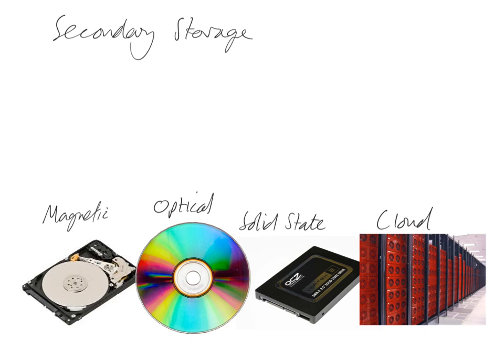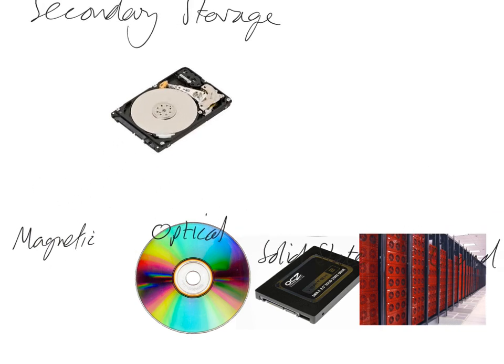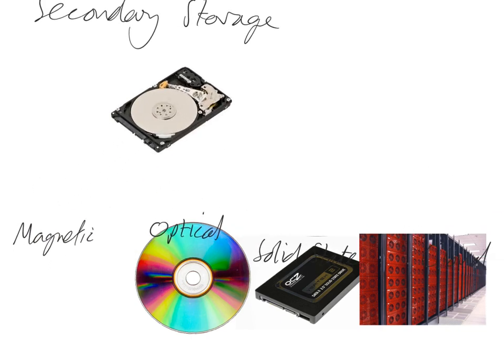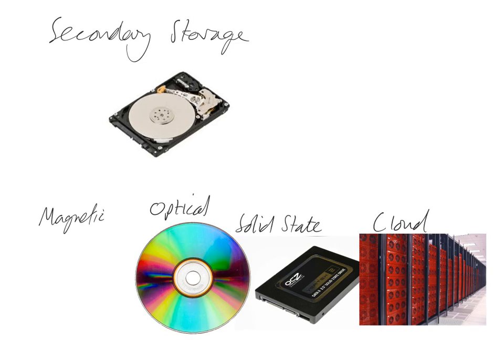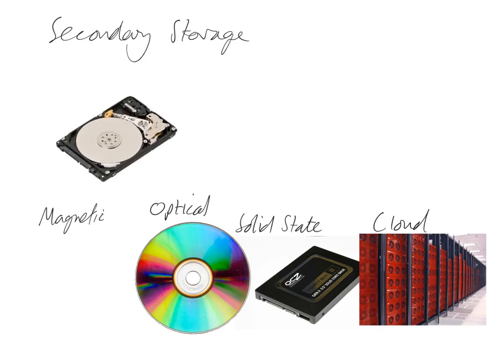There are a few different types available. You've got magnetic storage, which comes in the form of hard drives. Hard drives are pretty cheap in terms of what they give you for storage — you can buy one or two terabyte hard drives pretty cheaply nowadays. They store a lot of data and are reasonably quick in terms of data access, but they can be slightly fragile.